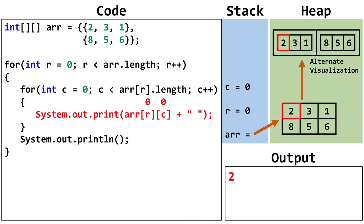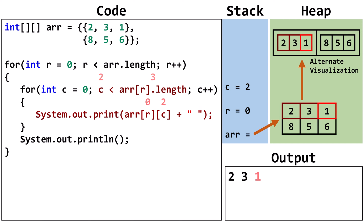We output arr row 0 column 0, which contains 2. Increment C to 1. C is less than 3, so we continue. We output arr row 0 column 1, which contains 3. Increment C to 2. C is less than 3, so we continue. We output arr row 0 column 2, which contains 1. Increment C to 3. C is not less than 3, so we terminate the inner loop. We output a new line.